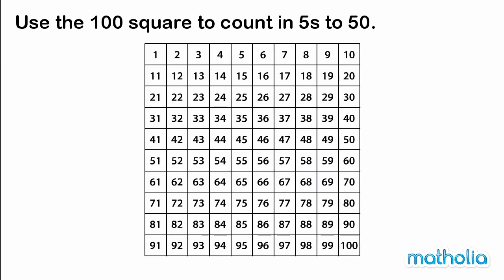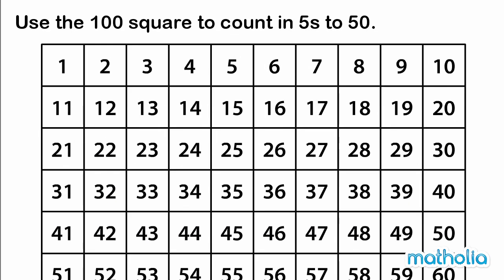Use the one-hundred square to count in fives to fifty. Five, ten, fifteen, twenty, twenty-five, thirty, thirty-five, forty, forty-five, fifty.